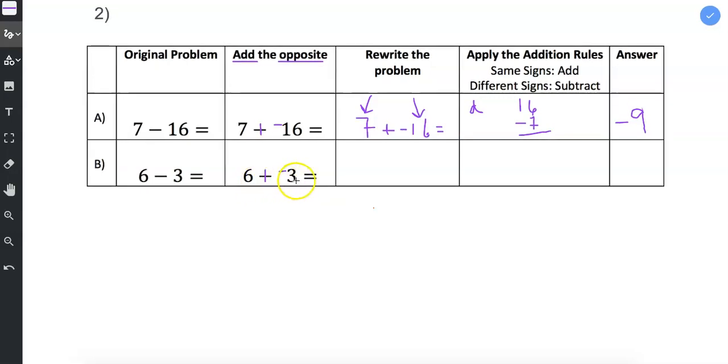6 plus a negative 3 is how I rewrite it. And I left the original problem alone so that we can compare. 6 plus a negative 3 is the same as 6 minus 3.